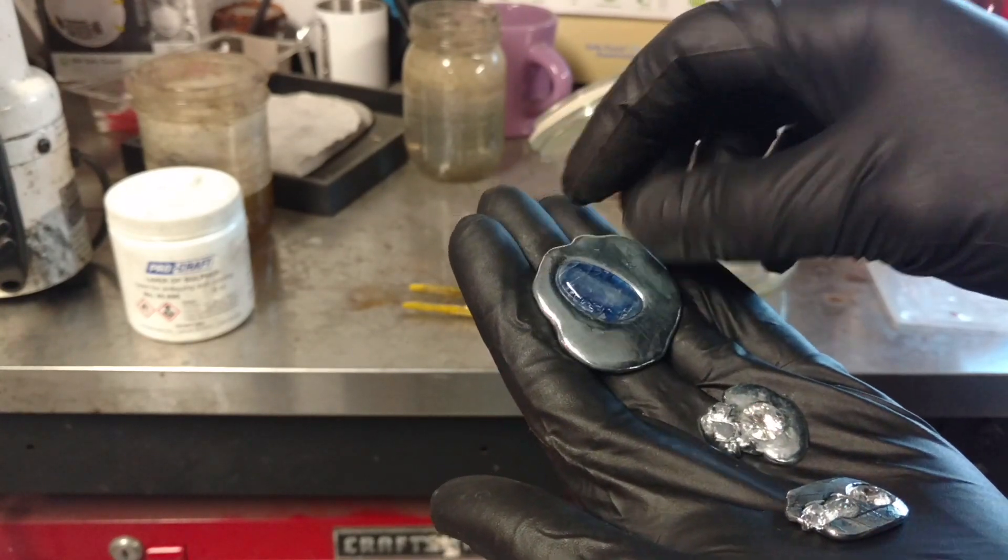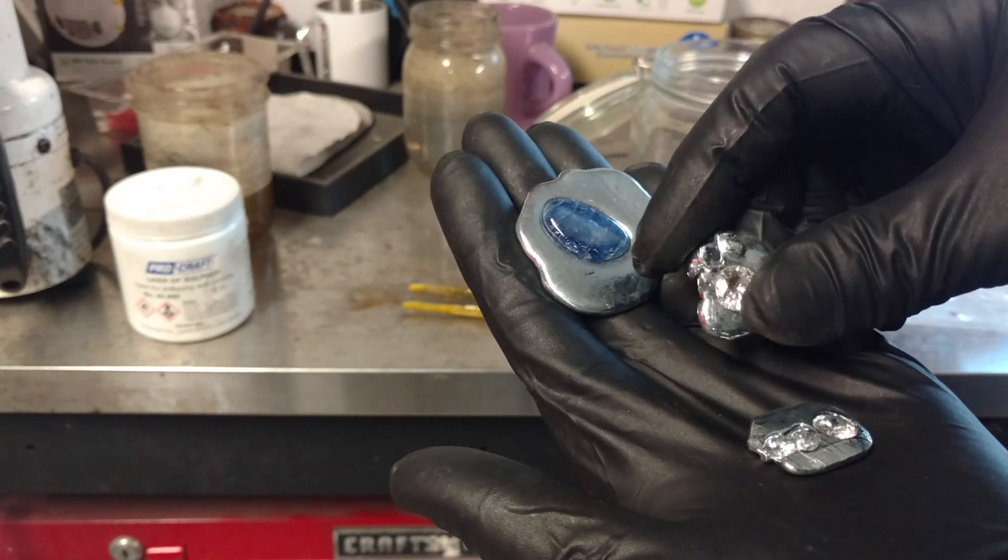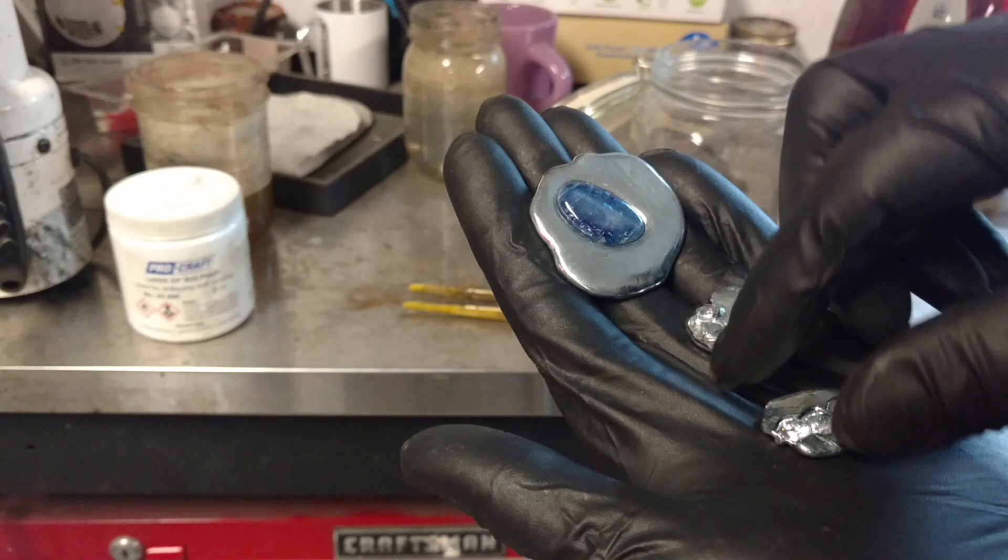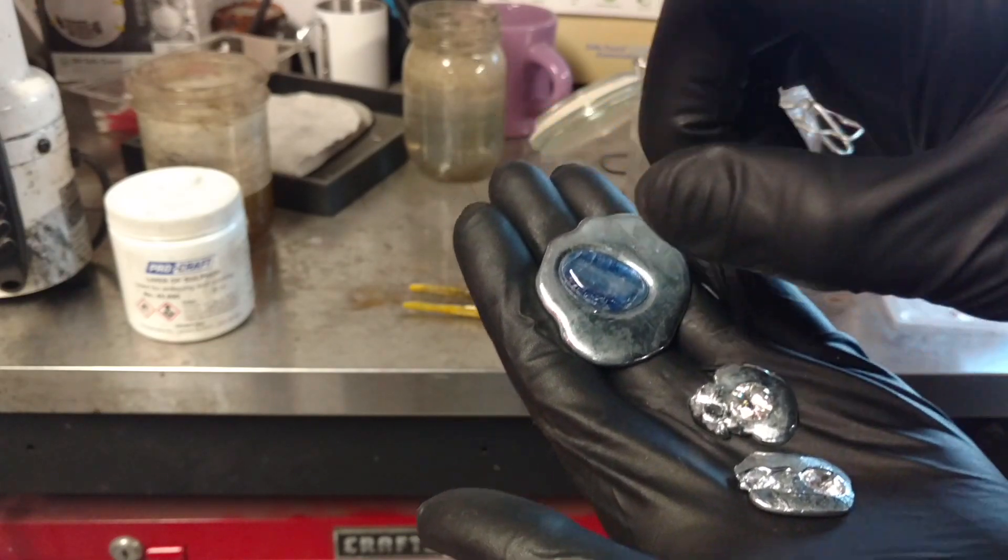So we want to get these stones out here. It doesn't matter if we damage the metal or not, it's the same value whether or not it's broken into a bunch of pieces. But the stones, we don't want to break any of these stones. So how do you get them out?